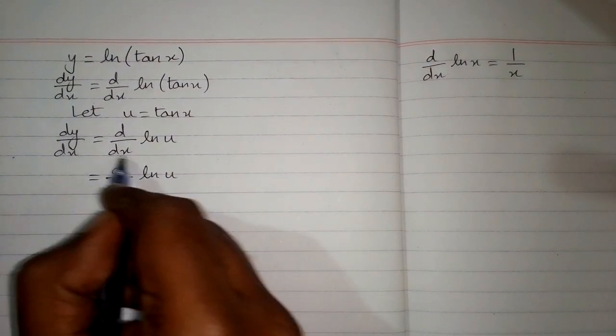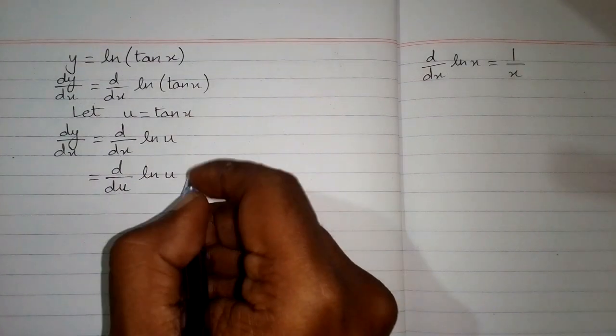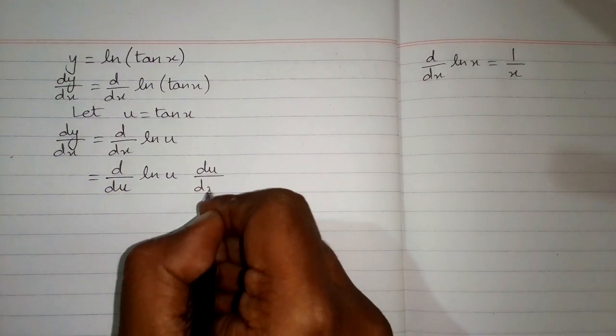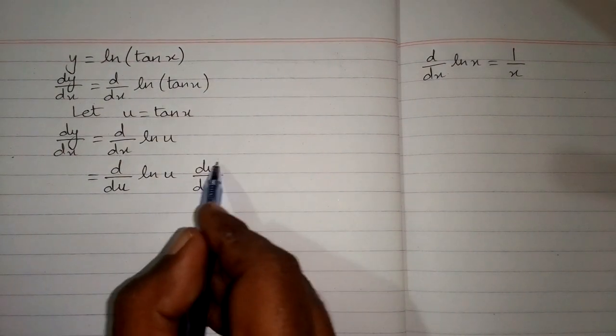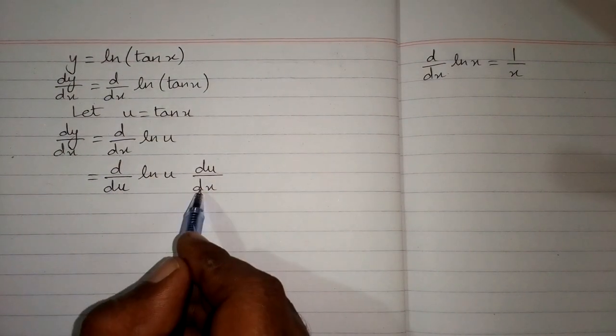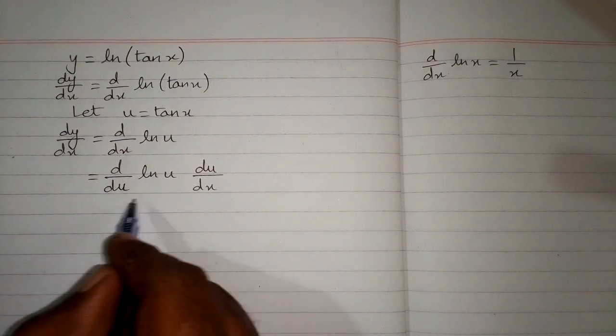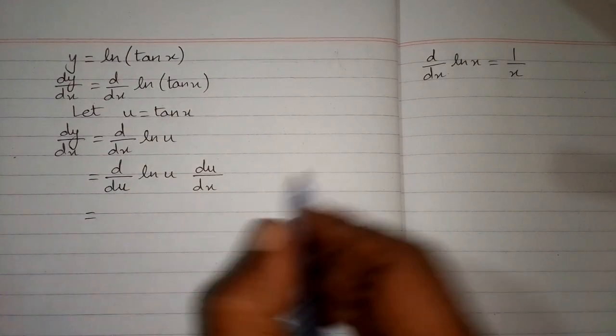So we will replace dx by du and multiply it by du by dx. This is called the chain rule of differentiation. And after cancellation of du again we have dx. So now we can apply this formula.